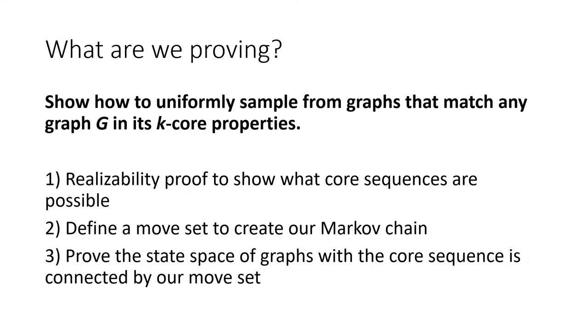Okay, so we've established that we're looking for a graph null model that might be a little better at things like, for instance, local structure. And we have this statistic, the k-core, that tells us a lot about local structure. So how do we combine the two? In this paper, we're doing something very similar to the configuration model, but instead of holding the degree sequence steady, we're holding the core sequence steady. We're going to show how to uniformly sample from graphs that match any graph G in its k-core properties. We're going to do this in a very similar way to the configuration model.